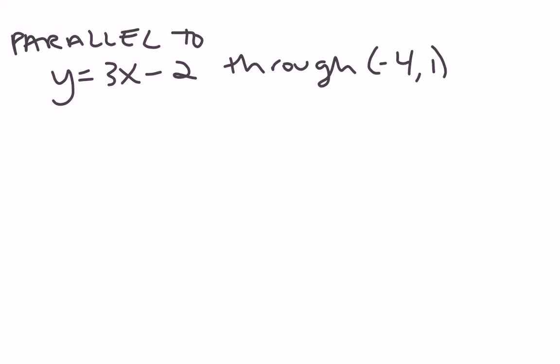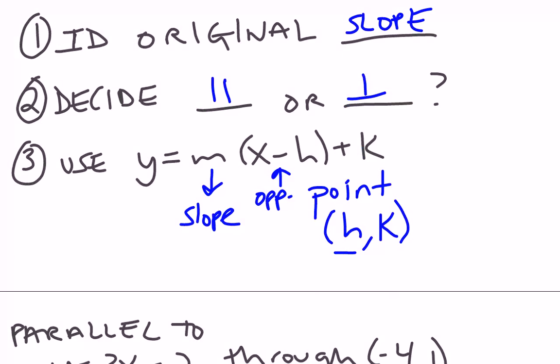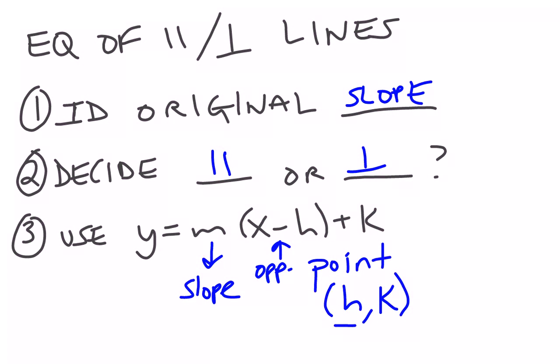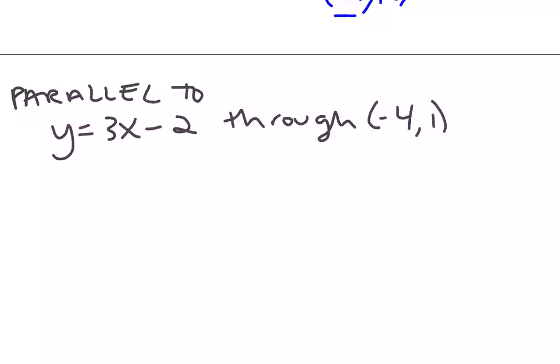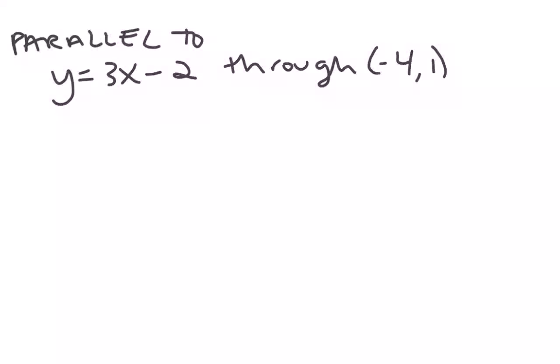So let's try some problems. Parallel to y equals 3x minus 2 through negative 4 comma 1. When we talk about the original slope, you might need to solve for y. Now let's look at a problem. So since y is by itself, I can go ahead and get started. So what we're going to do is we're going to say our original slope is 3.